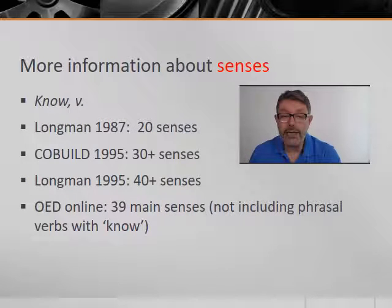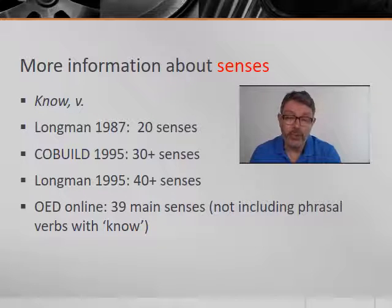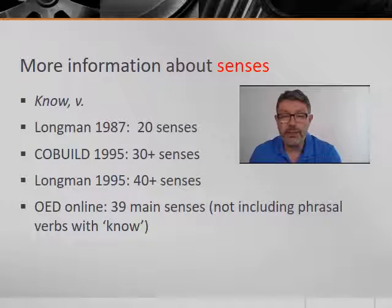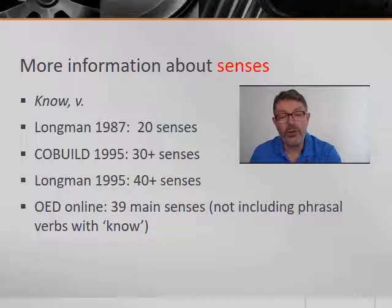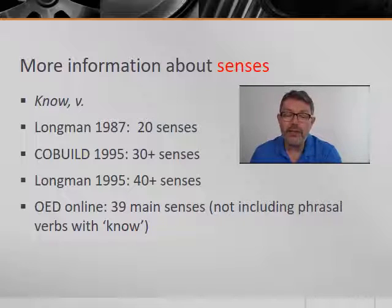Let's begin with the different senses of the term to be defined. A very common word in English is the verb 'know'. If you find a pre-COBUILD dictionary, you'll find a certain number of senses listed. The Longman Dictionary of 1987 lists 20 separate senses of the verb. The second edition of the COBUILD dictionary in 1995 lists over 30 senses. The corpus-informed Longman Dictionary of 1995 lists over 40. The current version of the Oxford English Dictionary lists 39 main senses plus a range of phrasal verbs with 'know'. The corpus revolution has cast a spotlight on the many different senses of common words, and much more nuance is now available to lexicographers.